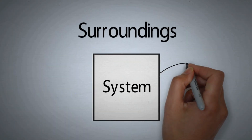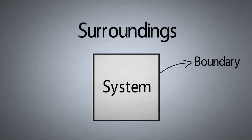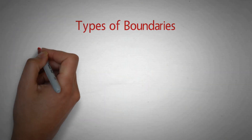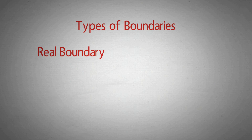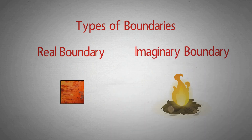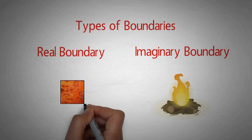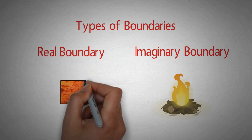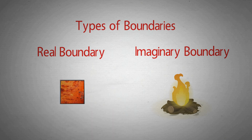So our next term is boundary. Boundary is that part which separates system and surroundings. यह boundaries भी दो type की होती हैं: real or imaginary. Hot iron block के case में boundary is clearly defined, so it's a real boundary. But flame के case में we don't have any actual boundary, but an imaginary boundary.